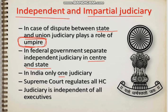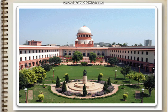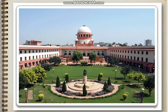In India, there is only one judiciary system, and it always goes in ascending order. The Supreme Court is the apex court of India — the highest court — and it regulates all other courts and high courts. The judiciary is independent of all executives, meaning no government official or politician can interfere in the working of the judiciary. It works independently but is a part and parcel of the system.